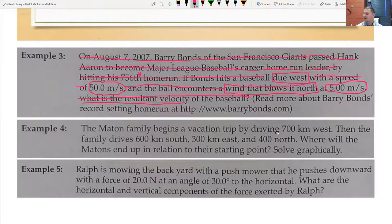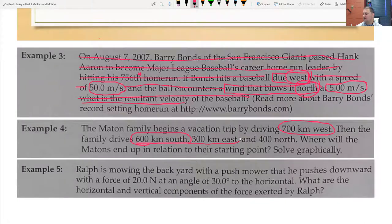The Maiton family begins a vacation trip by driving 700 kilometers west. Why am I circling not just the 700 kilometers but also the west? Because it's all together, that's going to be part of the number because that's going to give us the direction for a vector. And so even up here, the west and the north could be circled as being part of those numbers that follow them. Then the family drives 600 kilometers south, 300 kilometers east, and 400 north. Now the units are left off this number here, but they've been used throughout the problem.